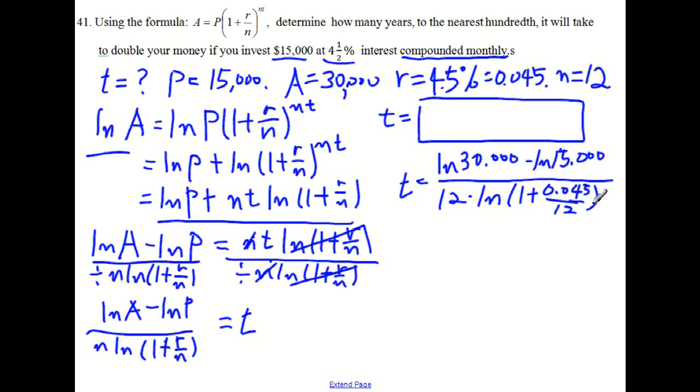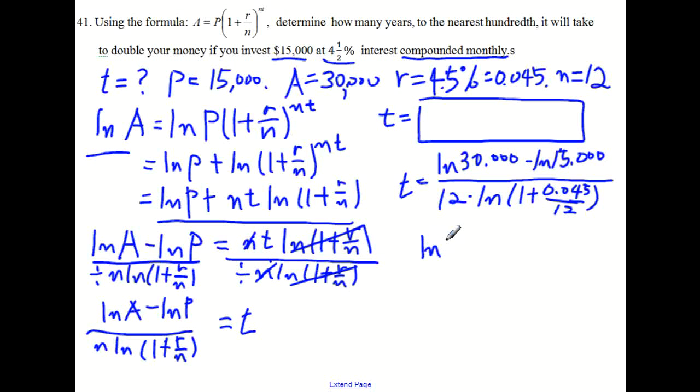So now we can use a calculator to evaluate this equation. But there is one thing we can make simpler. That is the numerator. So the numerator is the same as by using one of the laws of logarithms. The numerator equals ln of $30,000 divided by $15,000. So this is ln of 2.